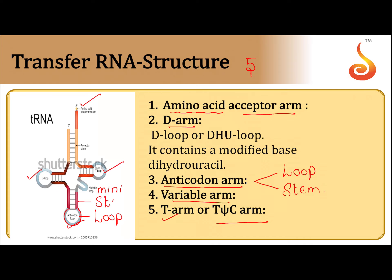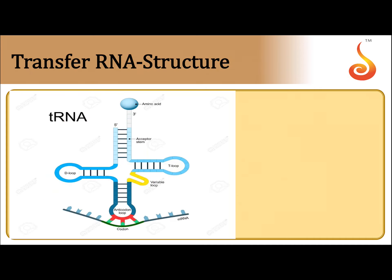The terminal part is called the loop, and below the loop is the stem. In the case of the amino acid acceptor arm, the loop is absent. In the variable arm, the stem is absent, though sometimes a stem may be present.